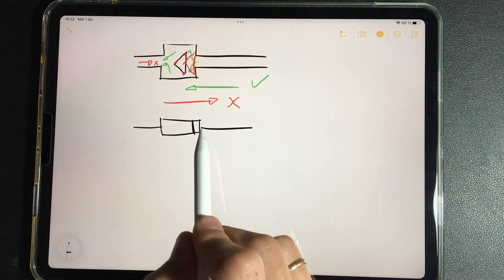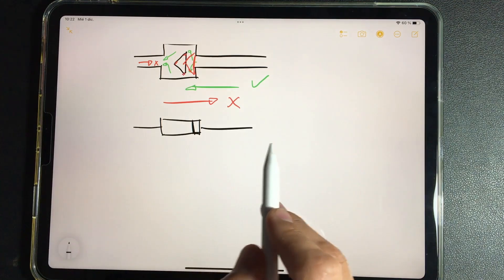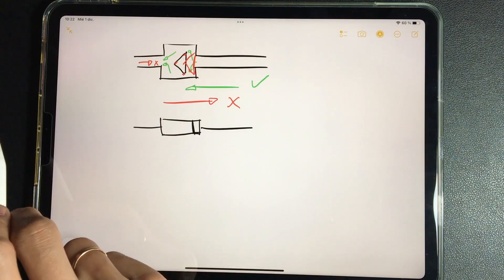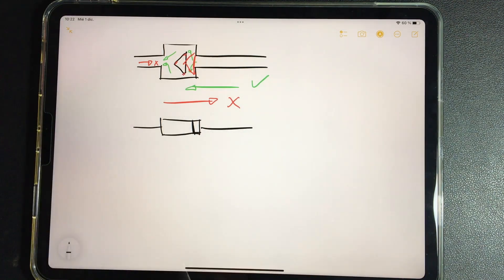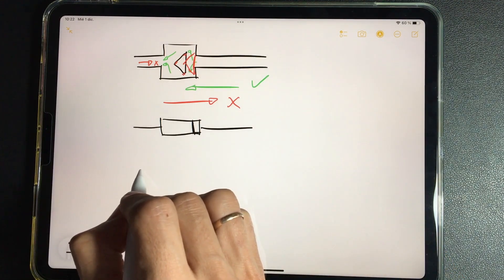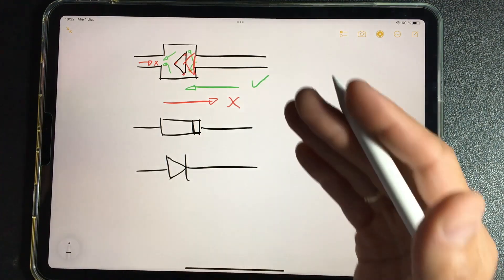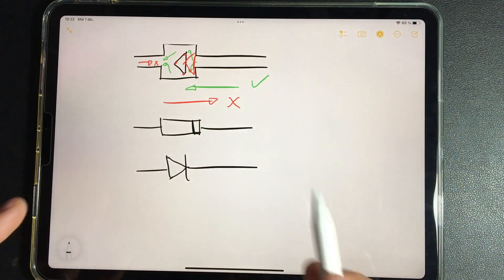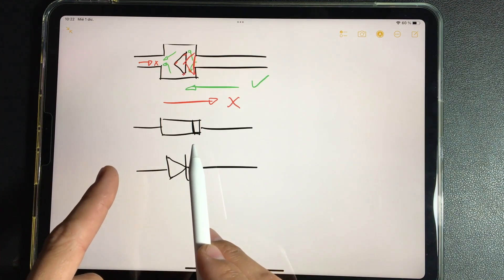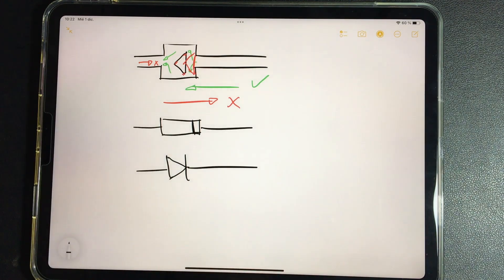This would be a diode with the side that has the striped thinner allowing the passage of electrons and the other side does not allow the passage of electrons. Its symbol is represented in this way to be able to understand it, also taking it to the symbols. A diode produces this effect. It allows electrons to pass on one side and does not allow them to pass on the other side.